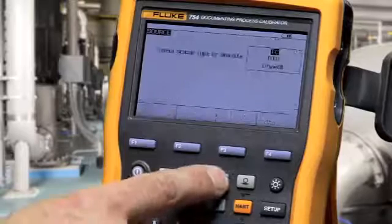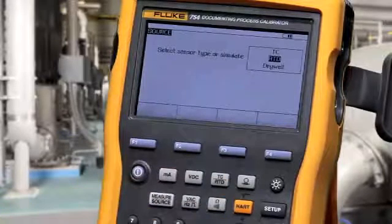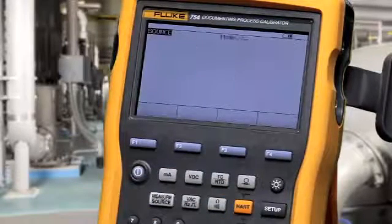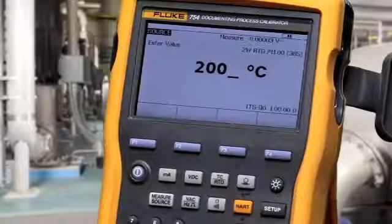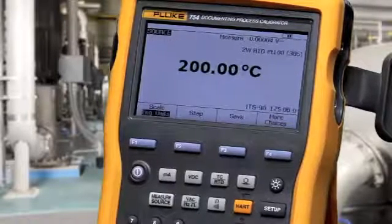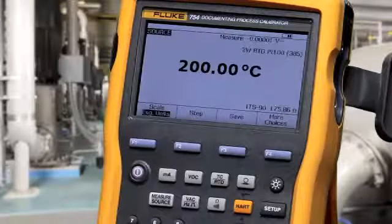To source an RTD, select RTD. Select your RTD type. Type the value that you want to source. Make your connection and apply that temperature value to the device you're testing.